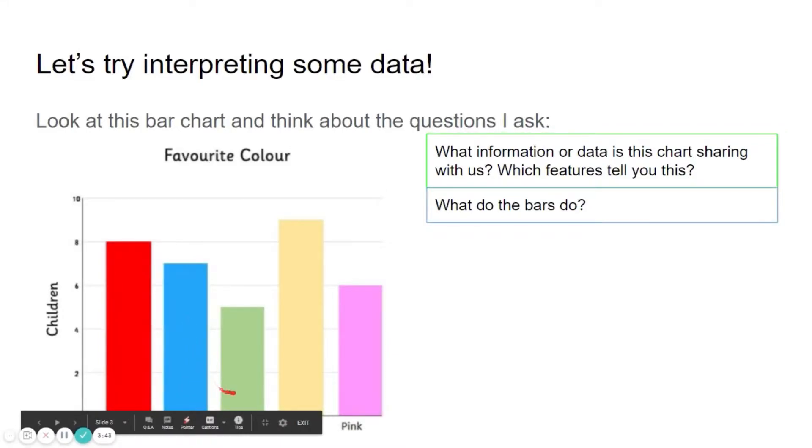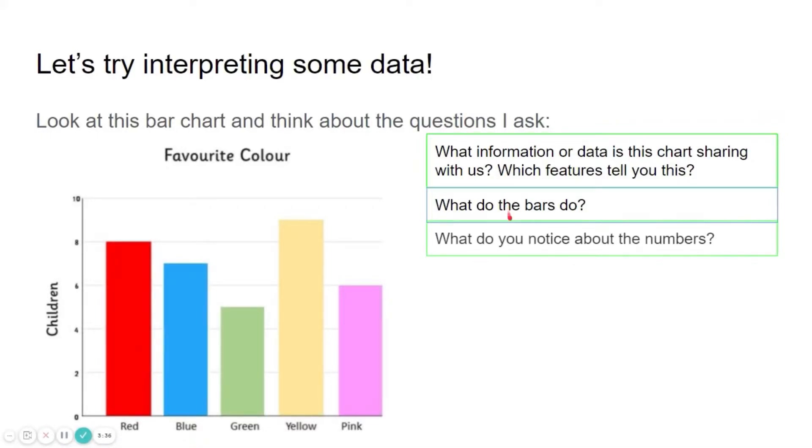Well the bars indicate how much of something there has been, so in this case the size of the bar chart indicates how many children chose a certain colour. What do you notice about the numbers? So on the left hand side there are numbers going upwards and this shows us the number of children that have chosen and it's going up in twos.